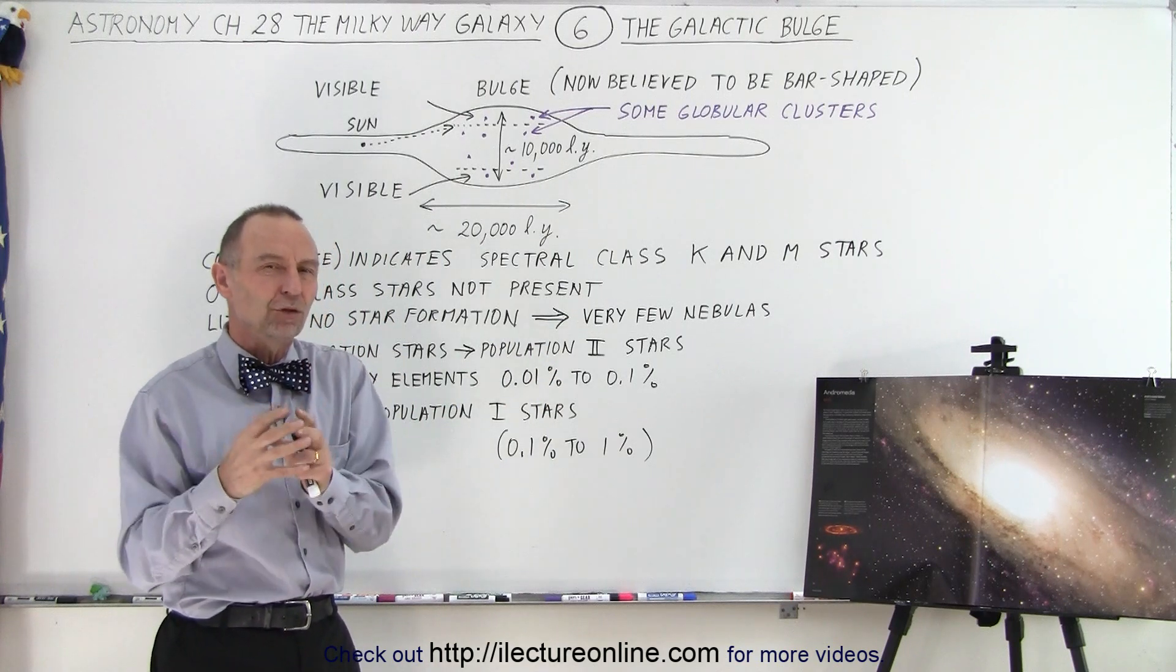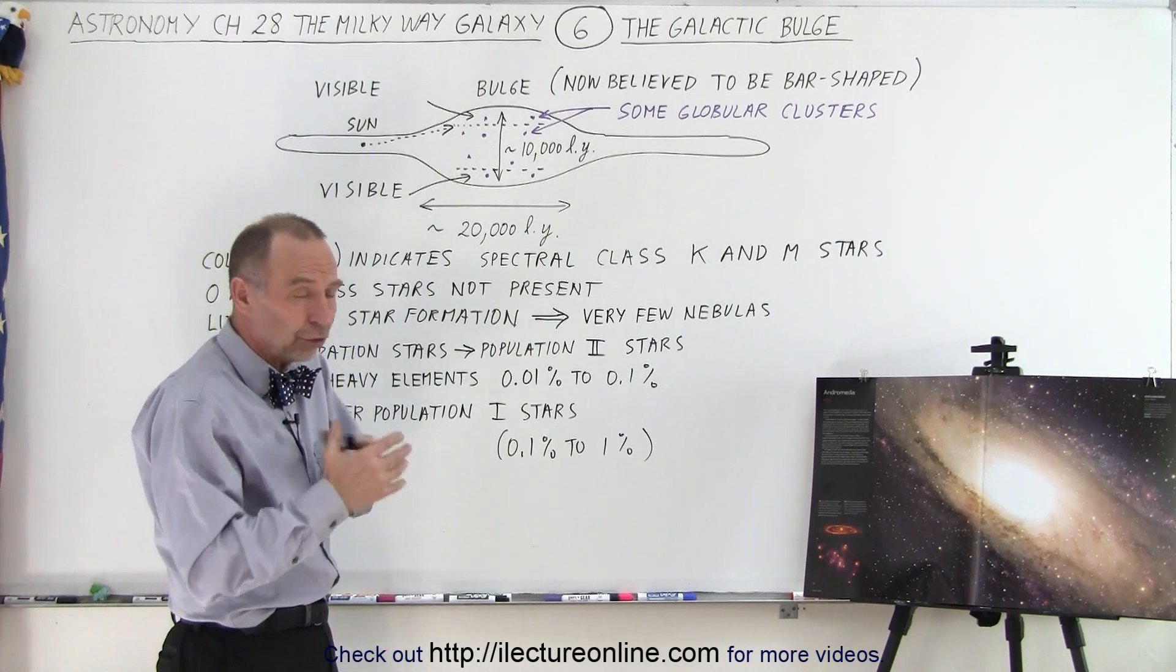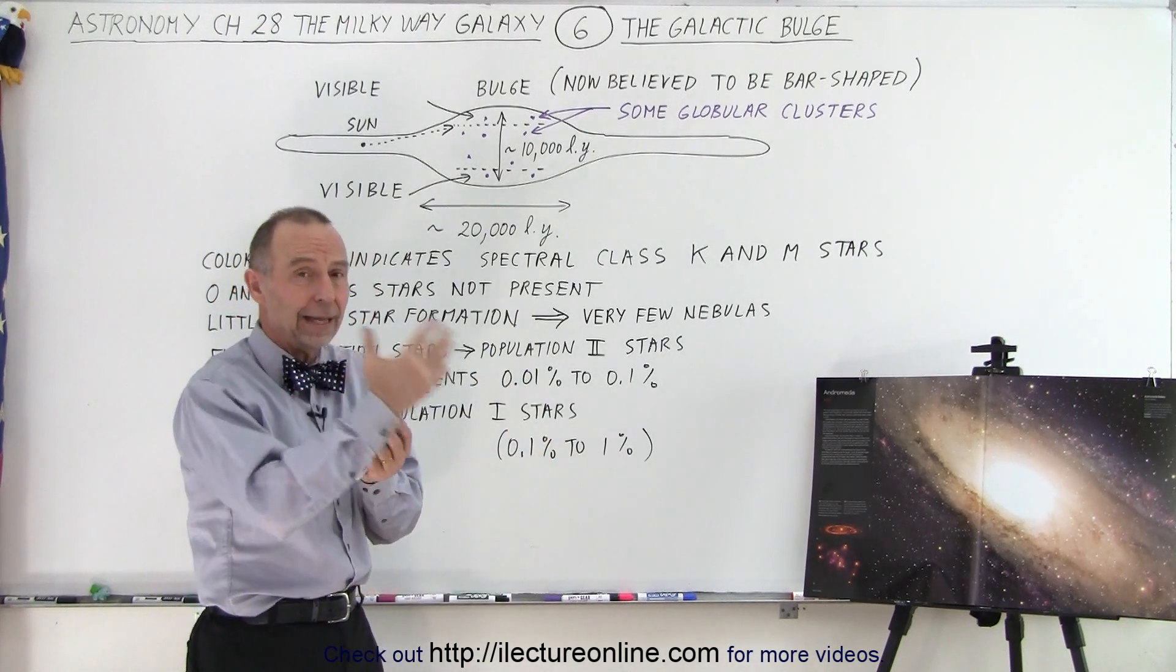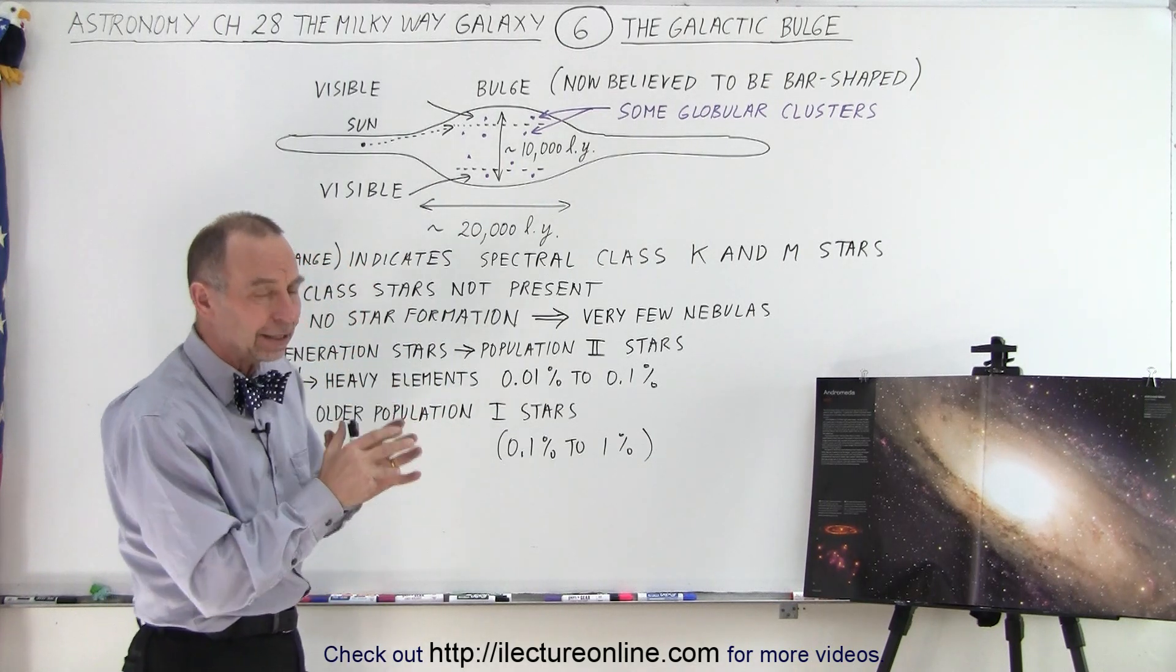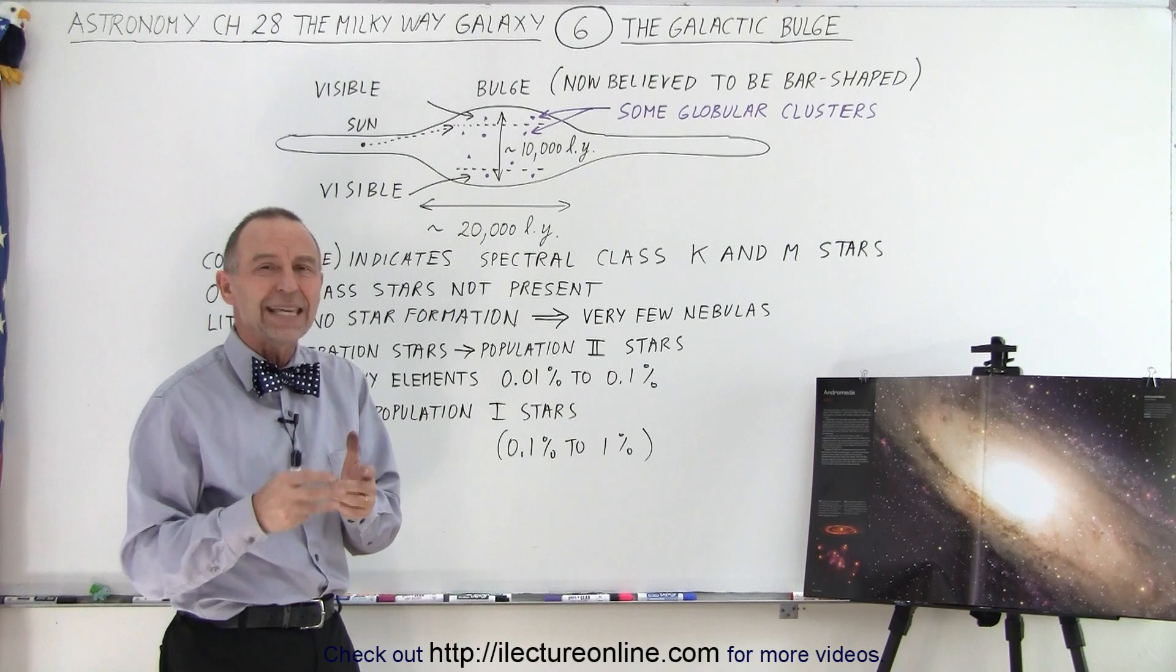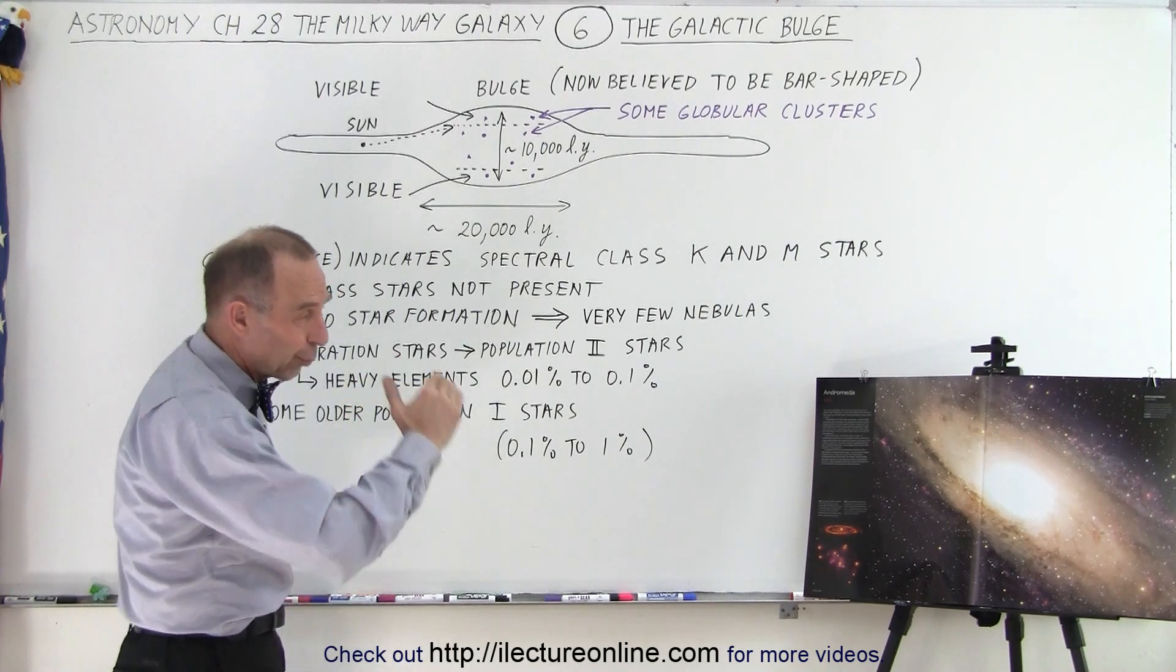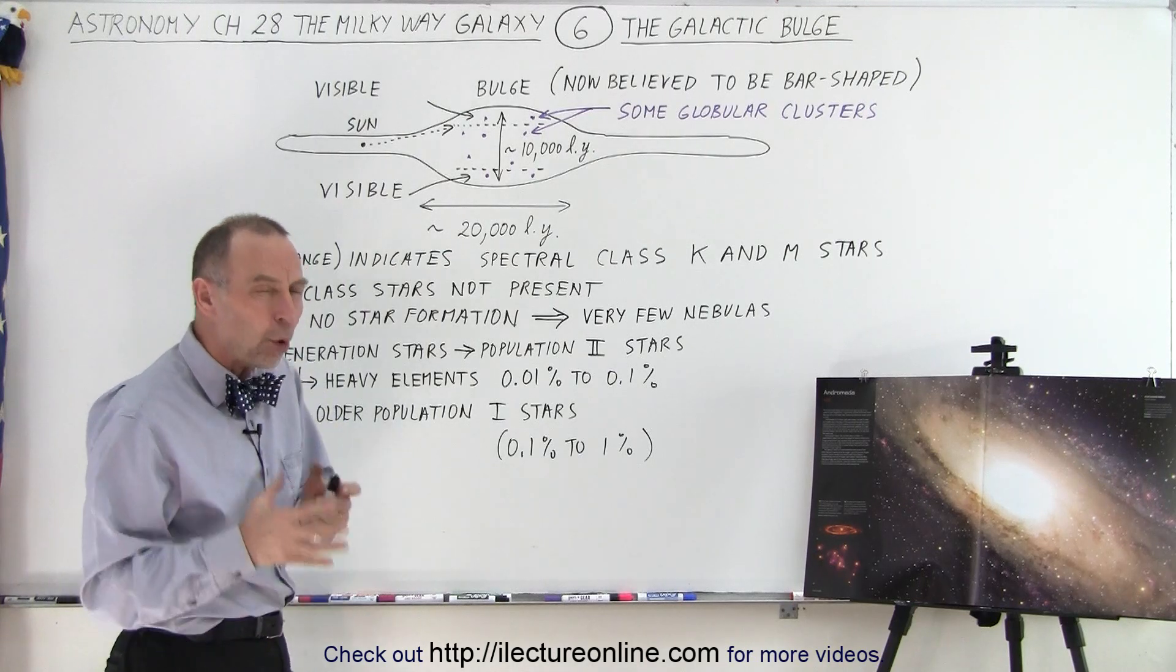You don't have that in the bulge. There's virtually no O and B and potentially A-type stars. Those have all already become red giants and probably have finished their life cycle. And so therefore, what we find at the galactic bulge is more or less the K and M-type stars, the orangey and the red stars at the very right bottom of the HR diagram on the main sequence. They're older stars.